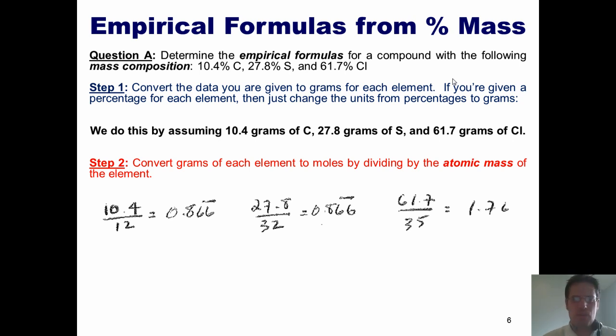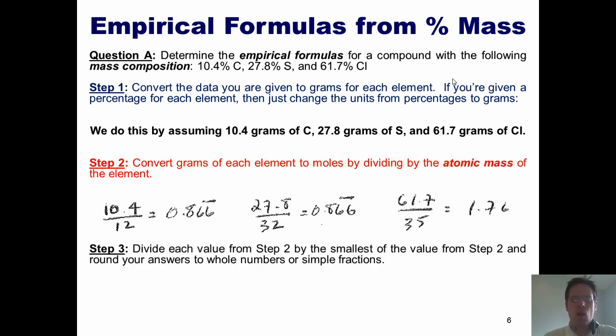Congratulations, we're done with step two. Step three, divide all of the answers that we just got by whichever one is the smallest, and round to the nearest whole number. You'll note that I've got 0.866, 0.866, and 1.76. Which of those three values is the smallest? Well, obviously, these two tie, 0.866.